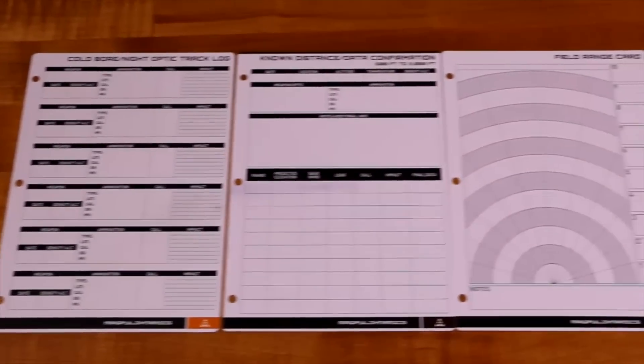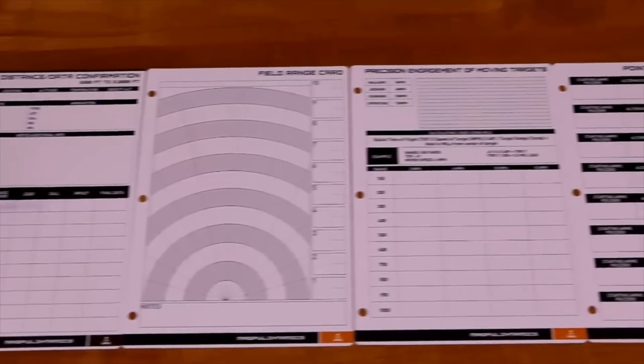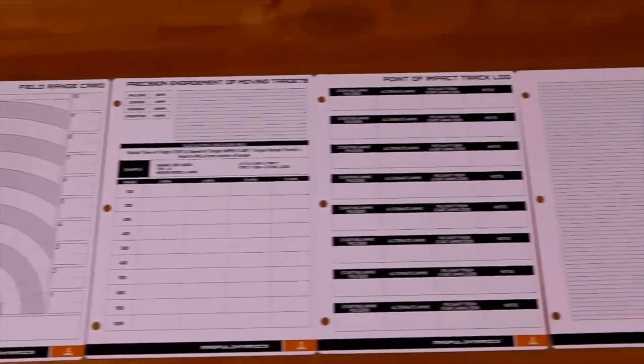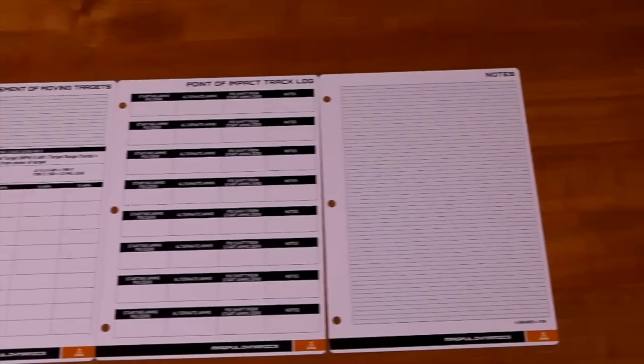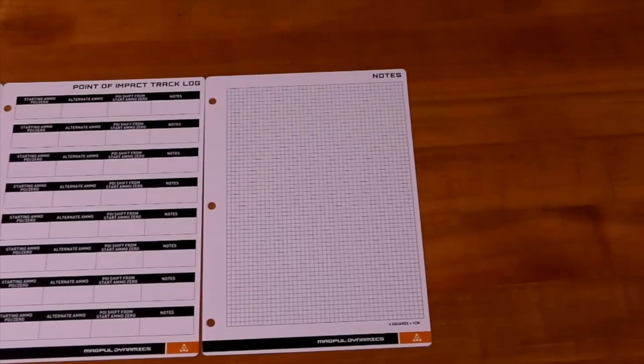The data book includes pages for cold bore or night optic tracking logs, known distance, unknown distance with field sketches, moving targets, point of impact shift with suppressors or ammunition changes, and general note pages.